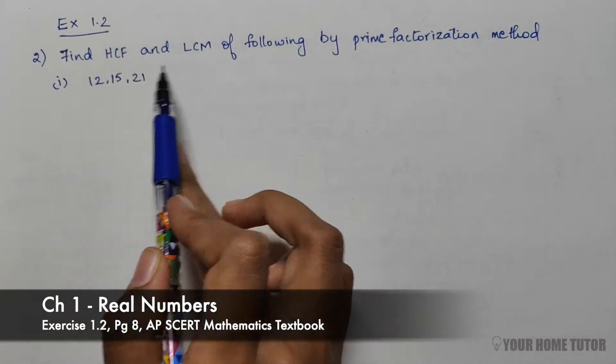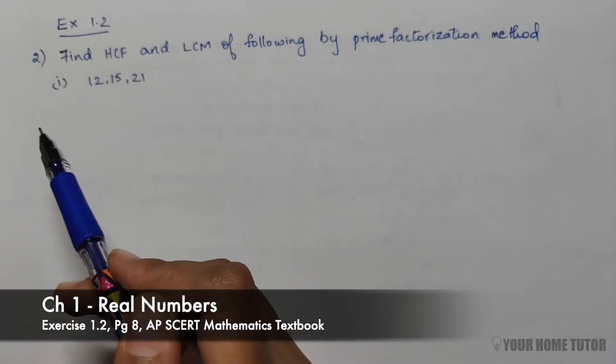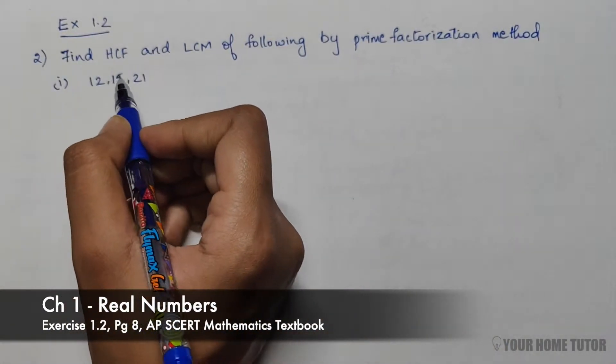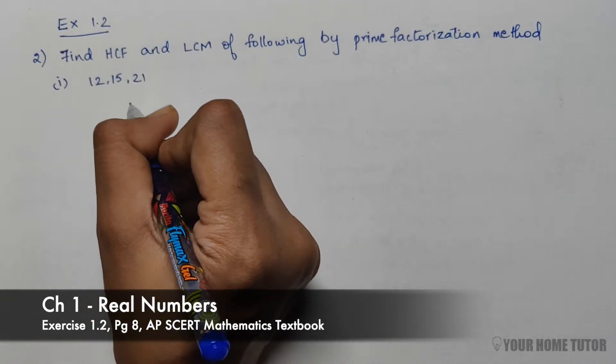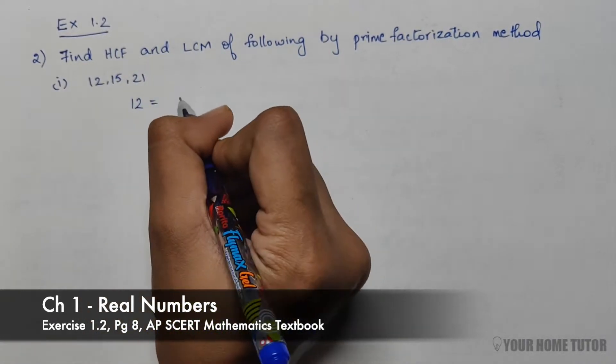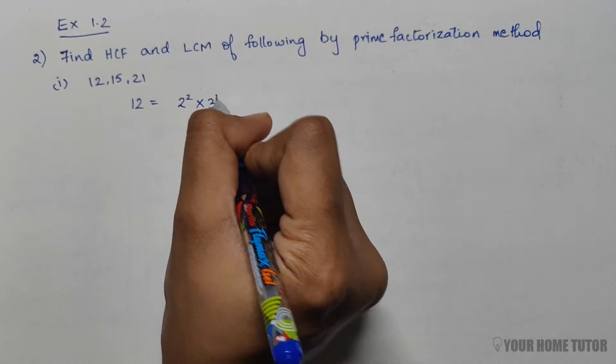Find HCF and LCM of 12, 15, 21 by prime factorization method. If we write the prime factors of 12, 15, and 21, for 12 the prime factors would be 2² × 3¹.